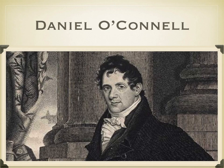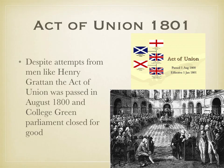Today we will be looking at the first of our two main figures from the era of the 19th century, Daniel O'Connell. But before we begin looking at O'Connell and his movement for Catholic emancipation, we need to refresh ourselves on what happened in Ireland prior to his emergence on the political stage. After the 1798 rebellion, the British government had passed the Act of Union, meaning that the Irish Parliament which sat in College Green in Dublin was to be closed and Ireland would be ruled directly from Westminster where the British government sat.